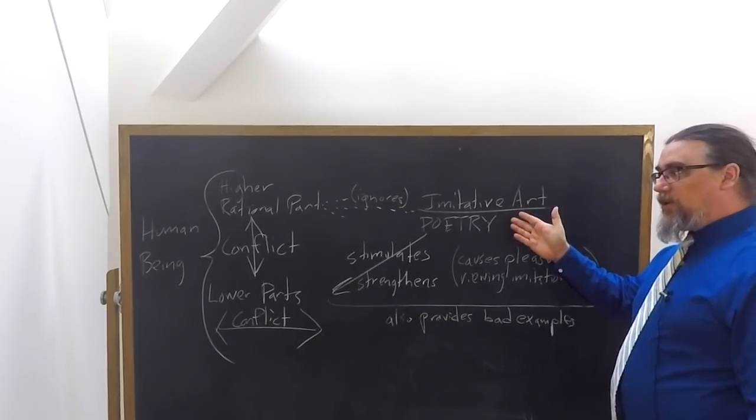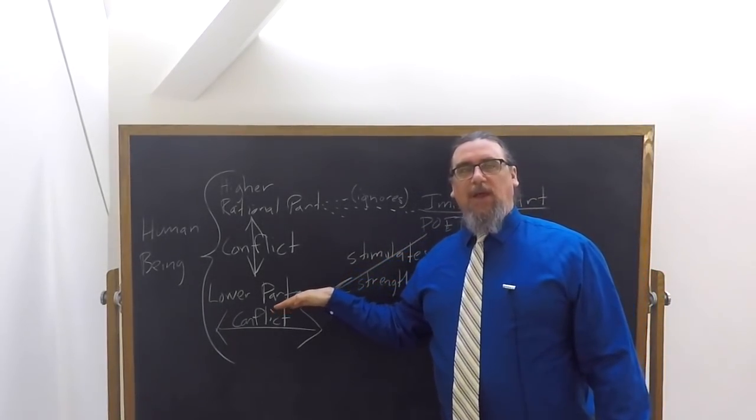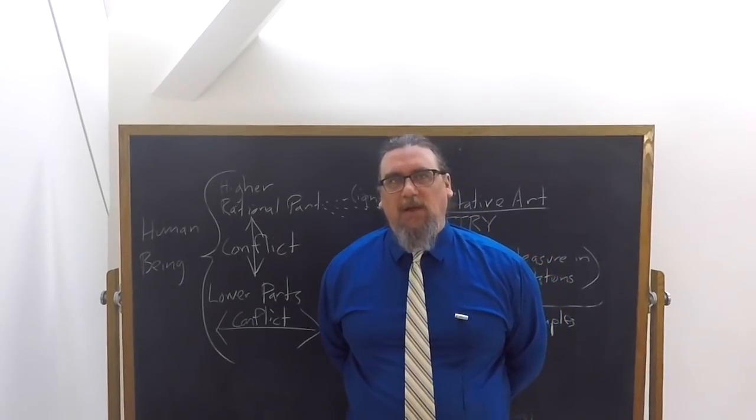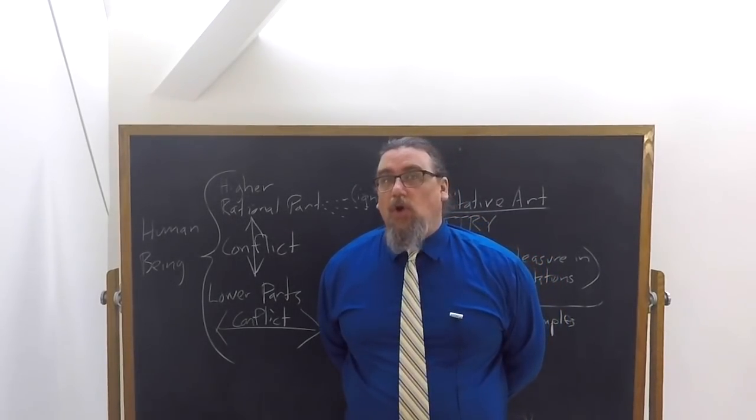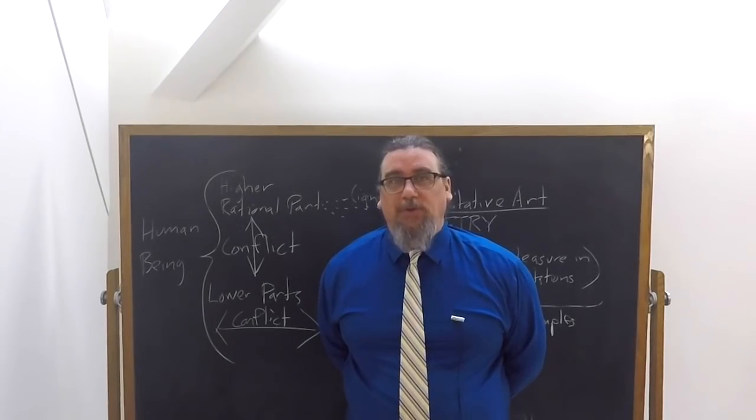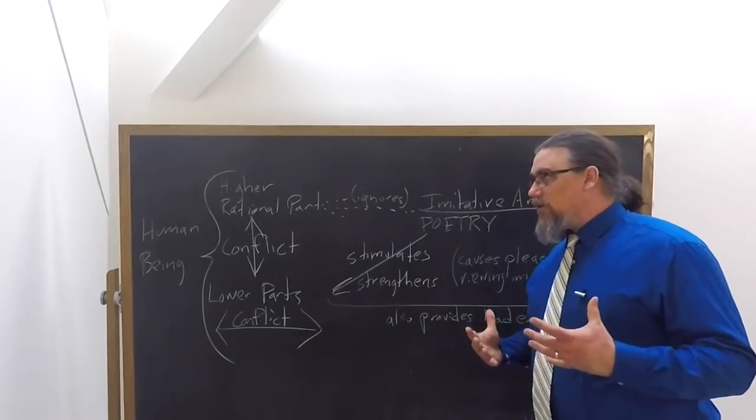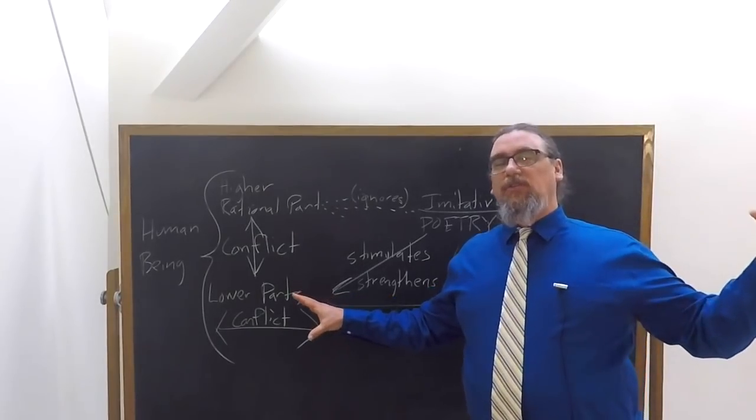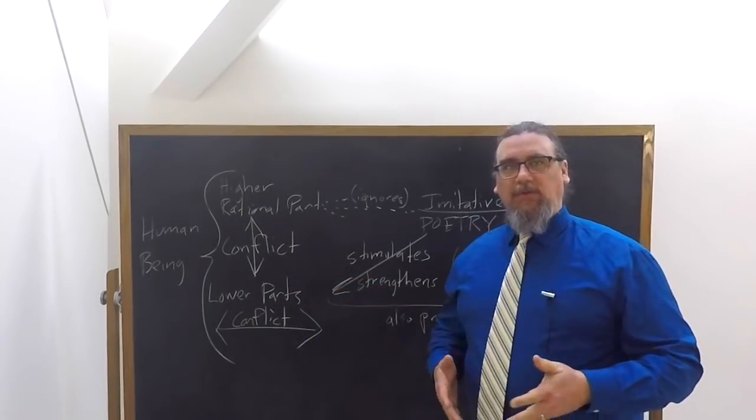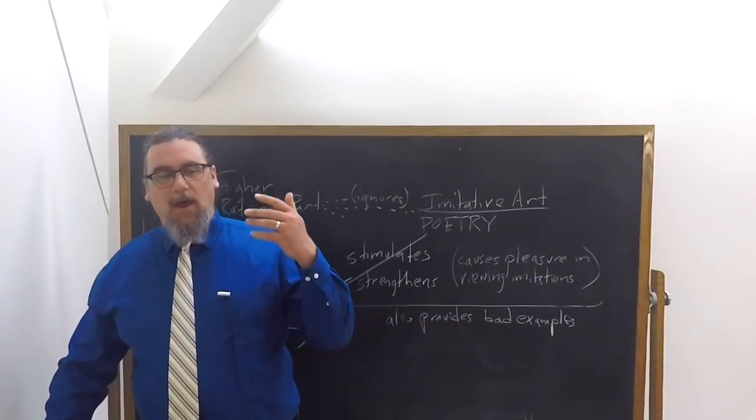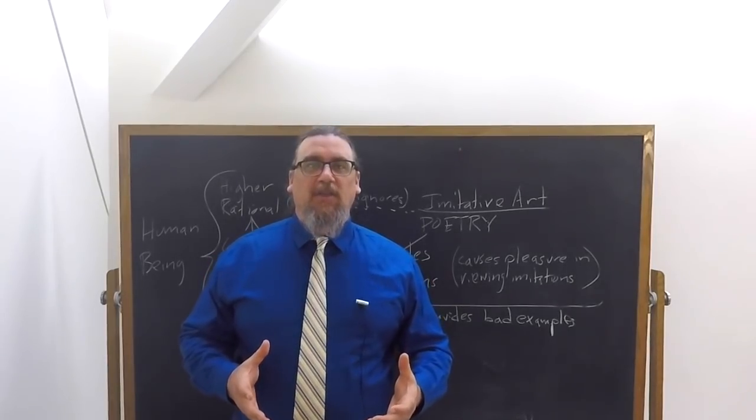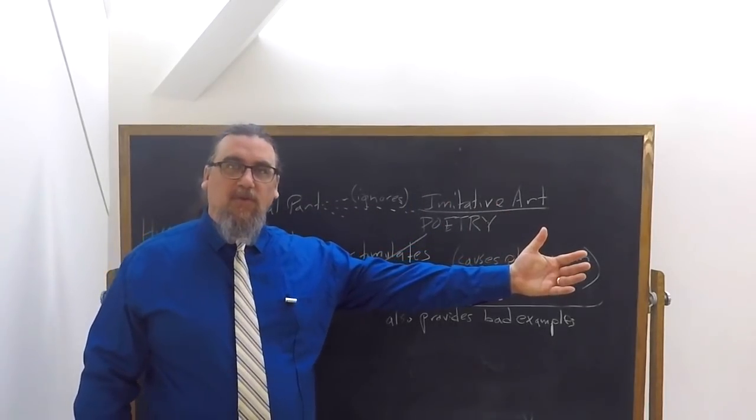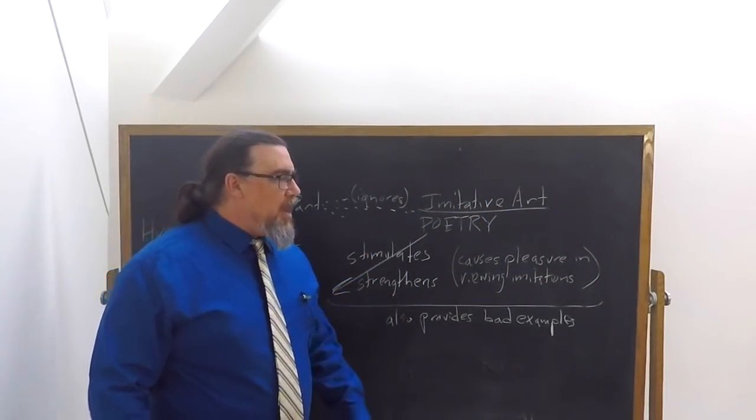So what happens instead? The imitative arts and in particular poetry, they stimulate and they strengthen the lower parts of ourselves, the appetites, the part of ourselves that's higher than the appetites that he calls thumos, that is concerned with courage, cowardice, anger, and social status or honor and desires. Those parts get emphasized both within the depictions of people and in the recipients, within the audience, or as he's calling them here in this particular passage, the judges, the crites, literally the critics, the people who observe the drama and then make judgments about it.